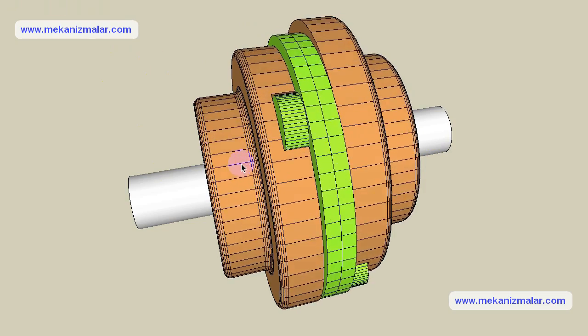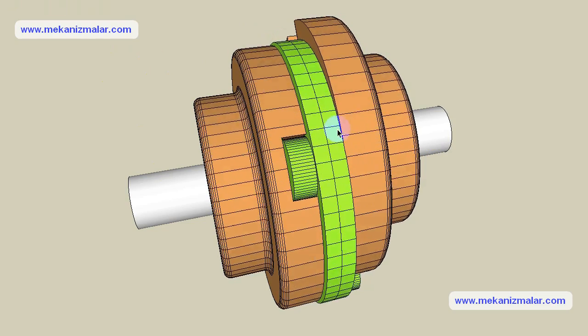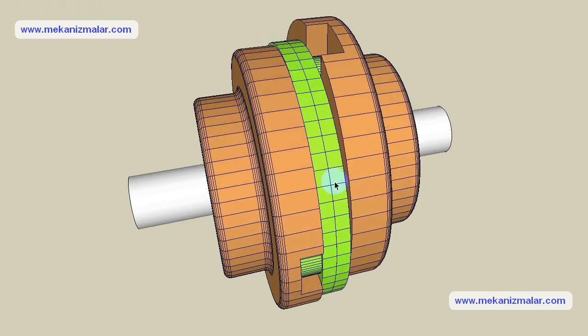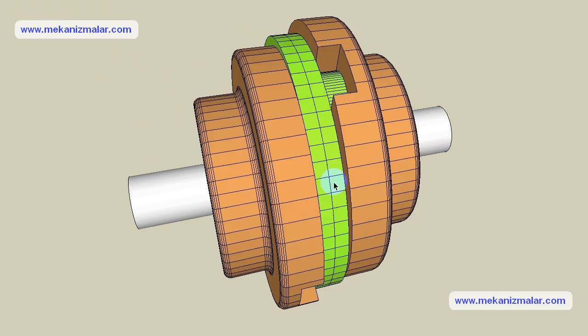Oldham coupling mechanism is a three-piece coupling mechanism comprised of two hubs and a center member. The center disc, which is usually made of plastic, transmits the torque.